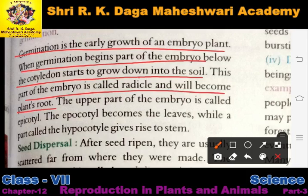This part of the embryo is called the radicle, and it will become the plant's root. Jaise jaise germination start hota hai, iska jo part soil ke andar buried rehta hai — jise hum radicle bolte hain — woh part bada hokar plant ki root banata hai.